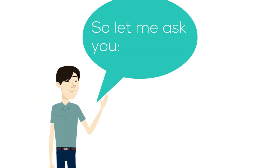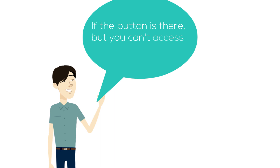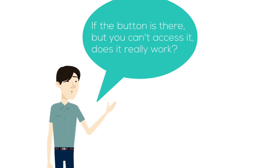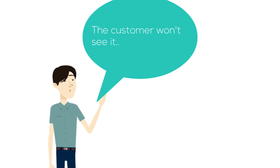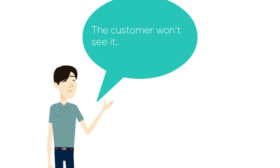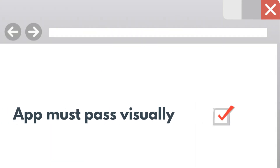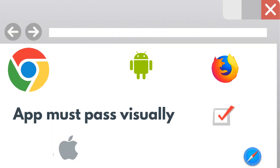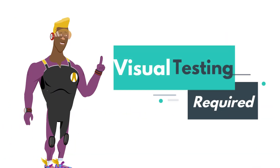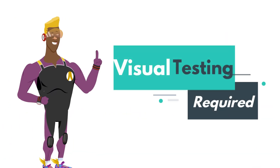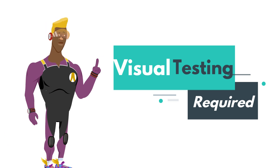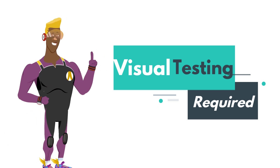So let me ask you: if the button is there but you can't access it, does it really work? The customer won't see it, is blocked from buying, and therefore, if we say that it's functionally working, is it really? To be clear, an app must pass visually across all different browsers and variations before actually being called passed. Visual testing is not only critical, but a 100% must — no question to functional testing.